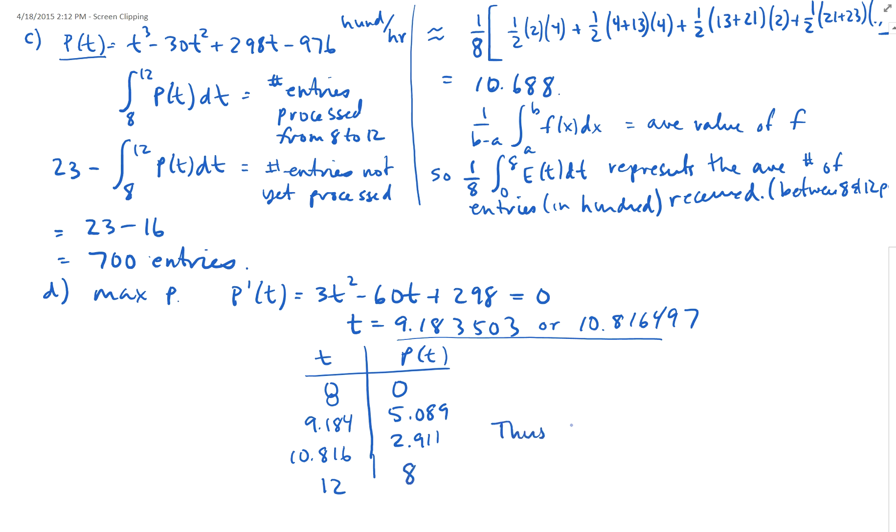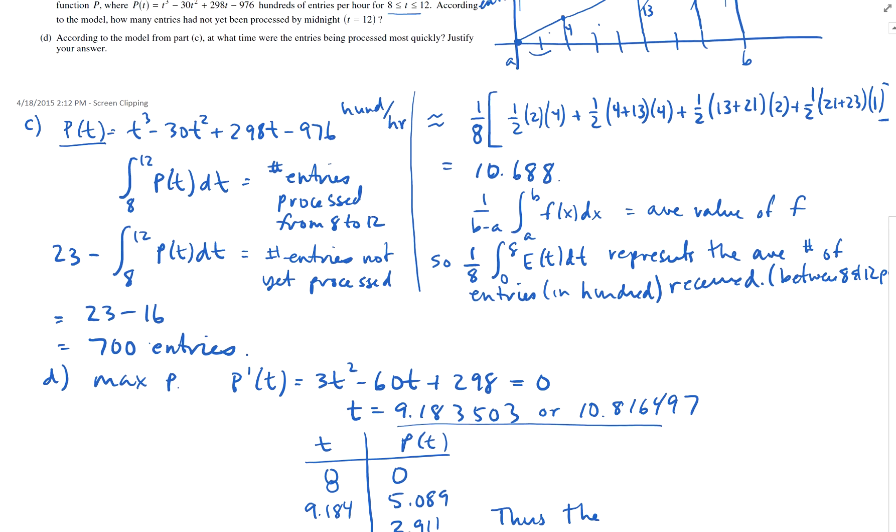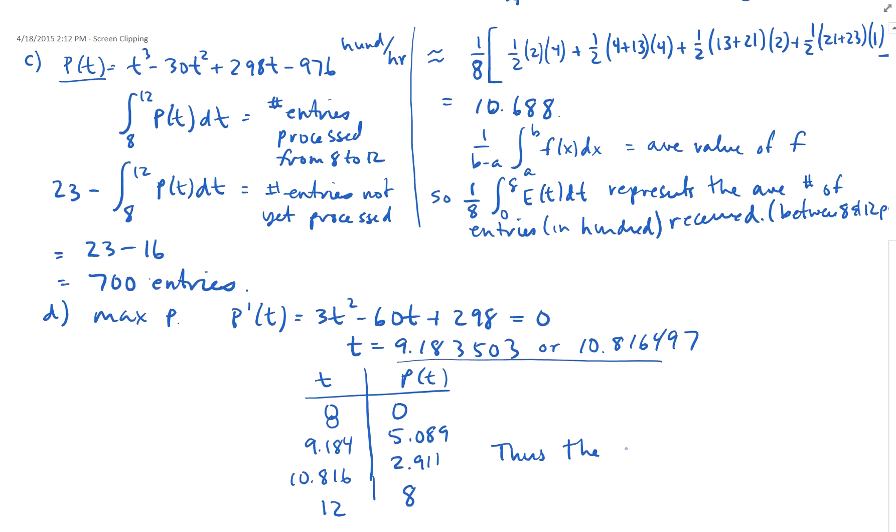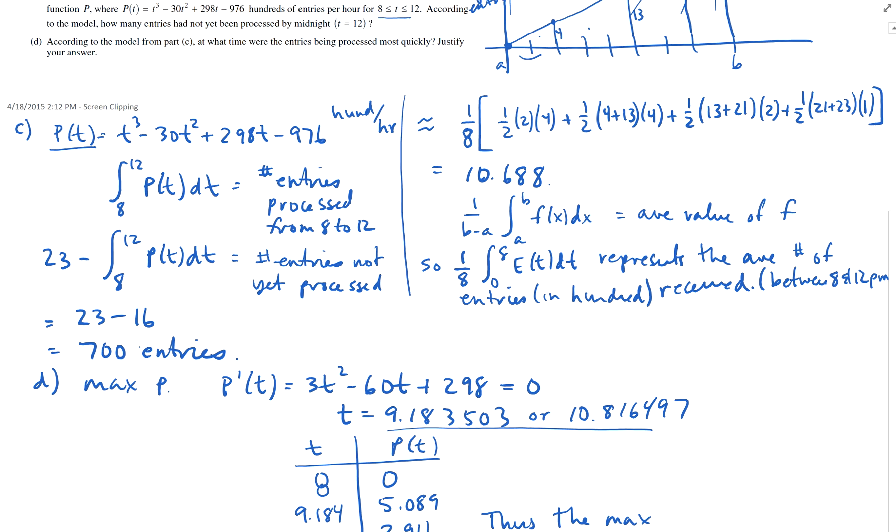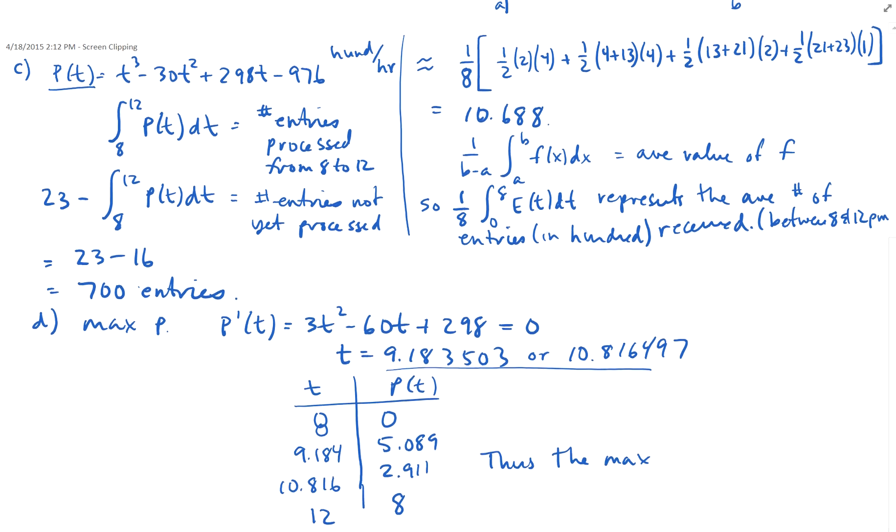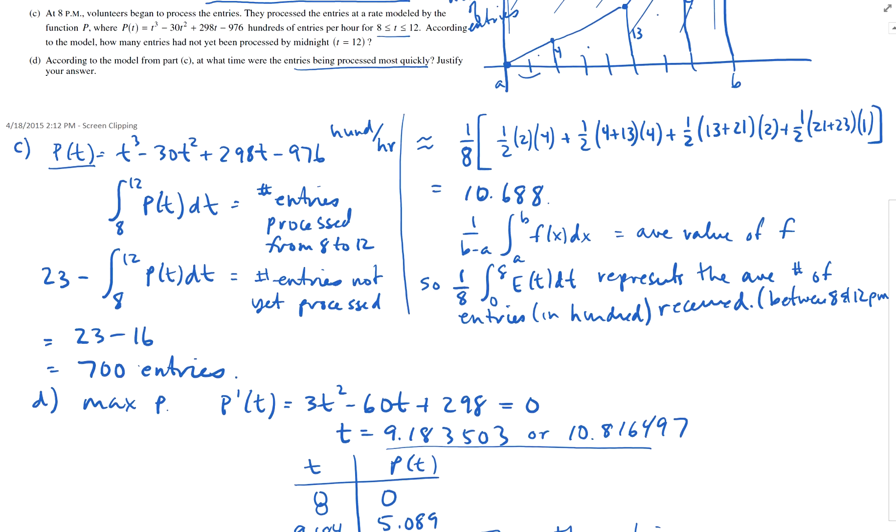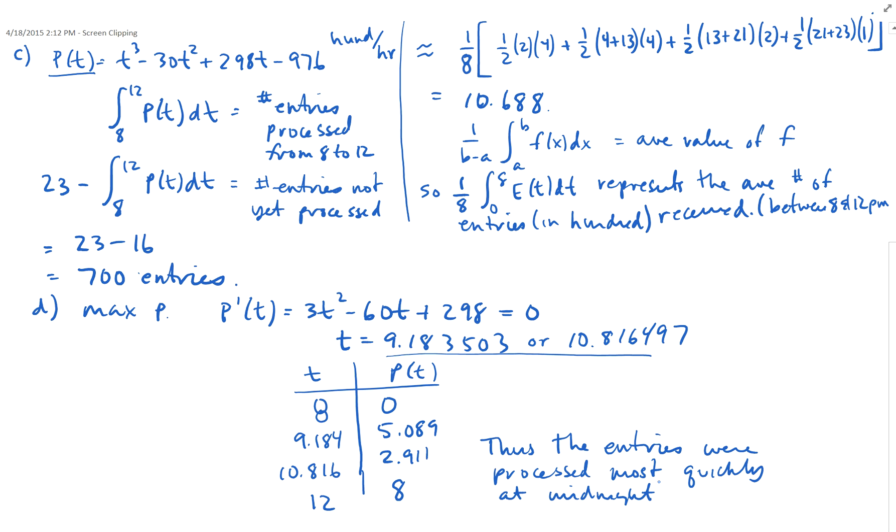And if you do that, you get 0, 5.089, 2.911, and 8. So, thus, the maximum processing time, or the entries are processed most quickly at midnight. It just says what time were they processed most quickly, so I don't even need to, I can say it right there. Midnight, done. There we go. Midnight.